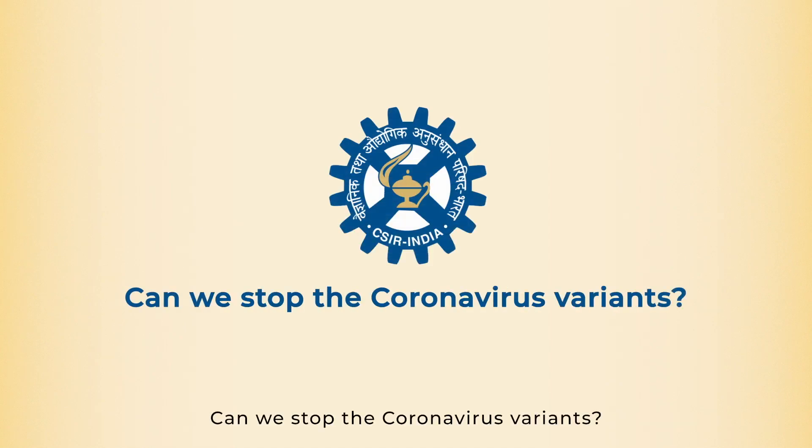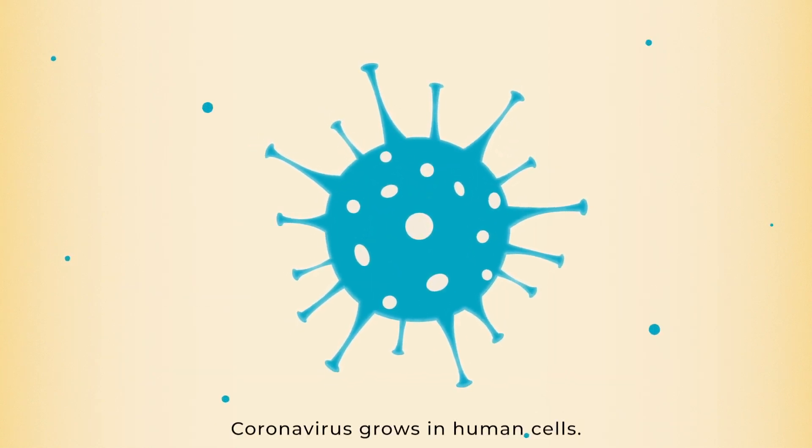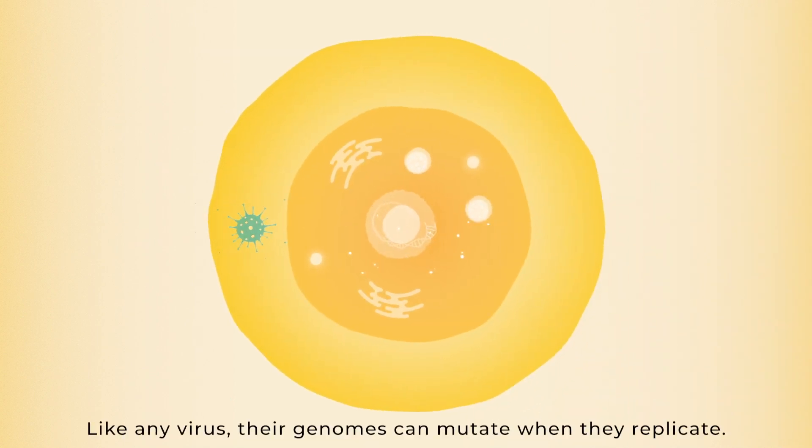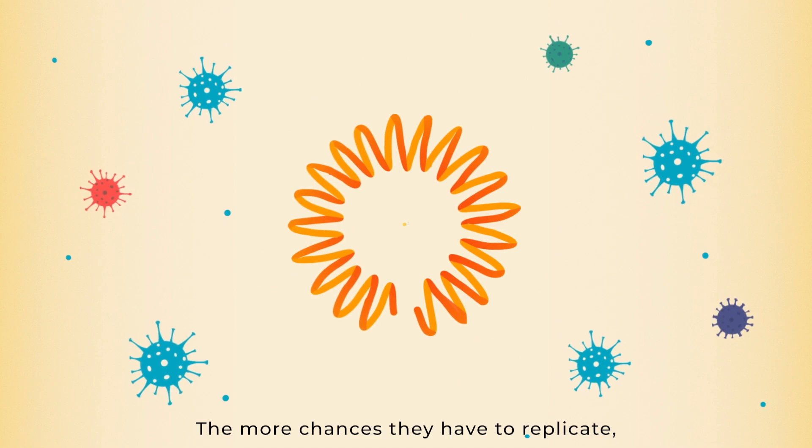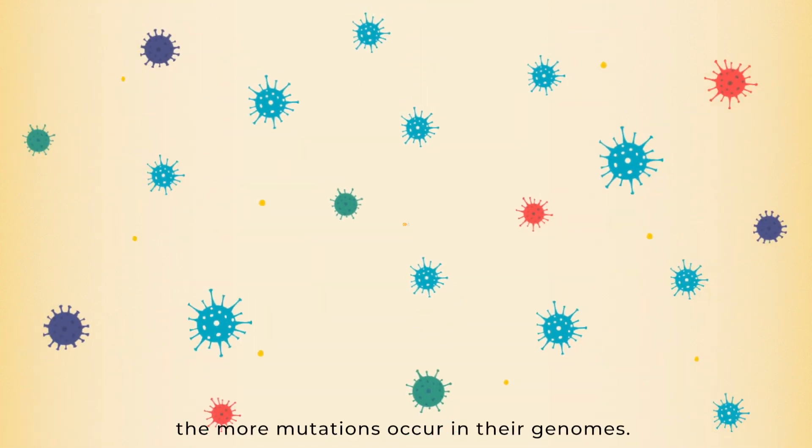Can we stop the coronavirus variants? Coronavirus grows in human cells like any virus, their genomes can mutate when they replicate. The more chances they have to replicate, the more mutations occur in their genomes.